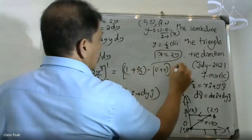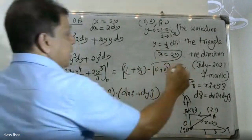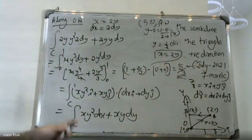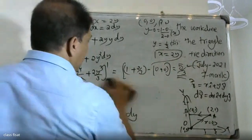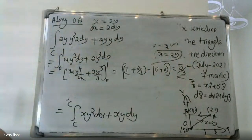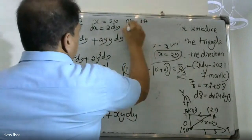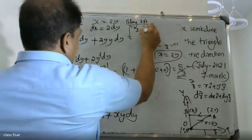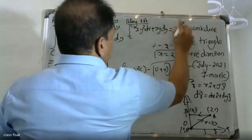The answer for path OA is 5/3. The integral of xy² dx plus xy dy is equal to 35 by 3.